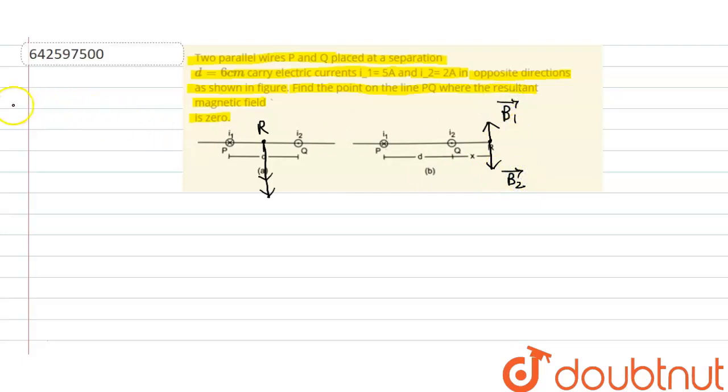So we know that due to a long current carrying wire, magnetic field is given by mu naught i divided by 2 pi r, where r is the perpendicular distance from the wire. So here, perpendicular distance for wire P will be d plus x, and for Q wire it will be only x.